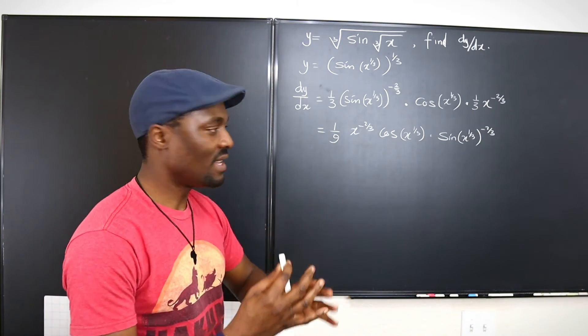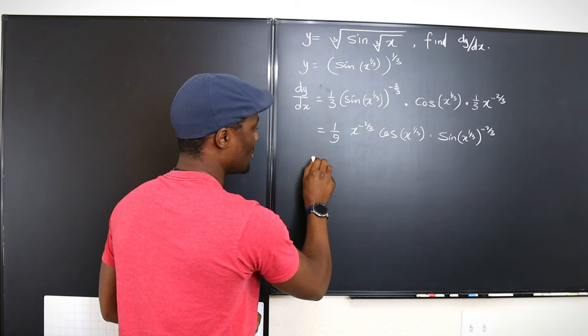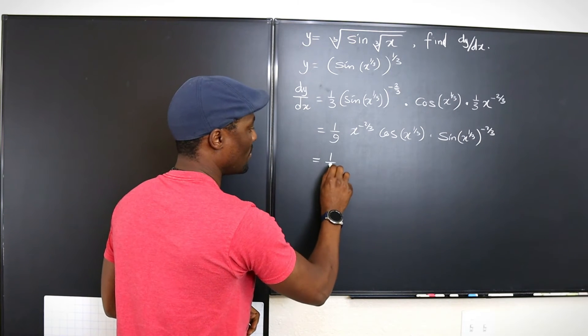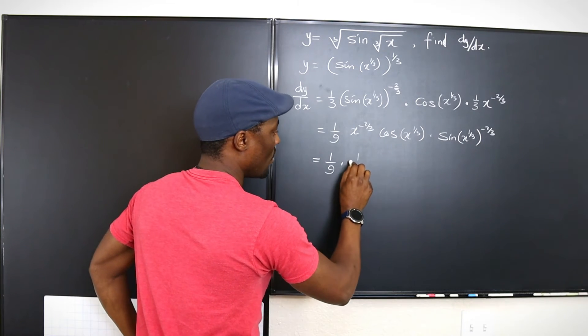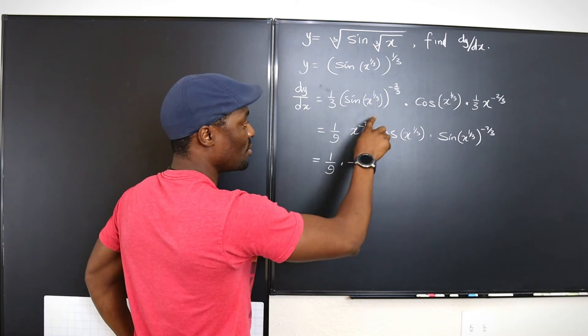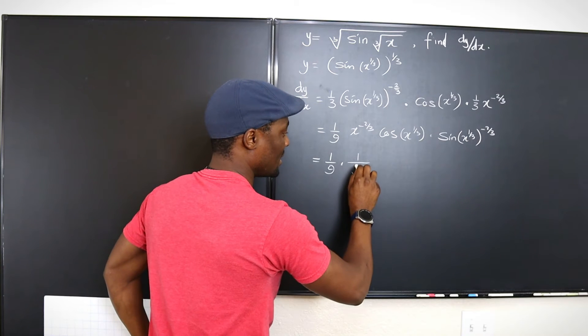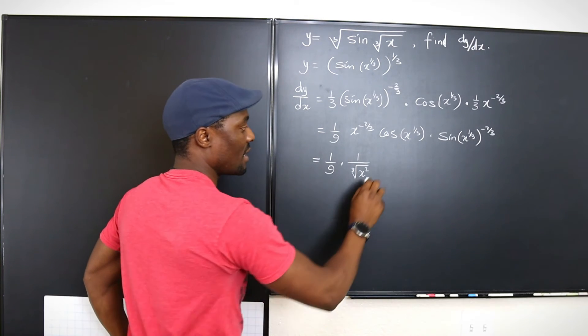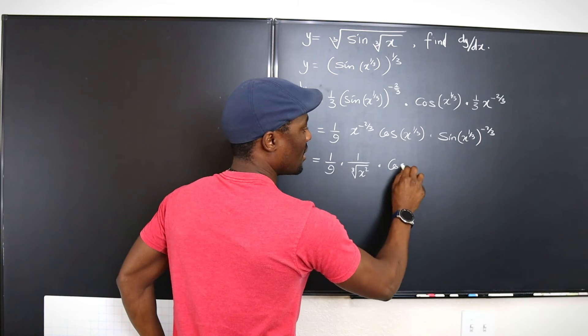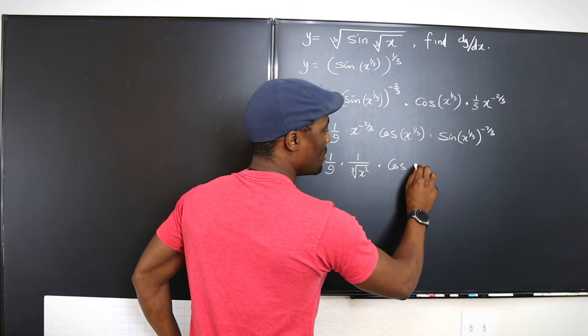But let's simplify things and make things cleaner. So this expression is going to look like this. One over nine multiplied by, this is going to be one over the cube root of x squared. So we can write it this way: the cube root of x squared. And then this is going to be cosine cube root of x.